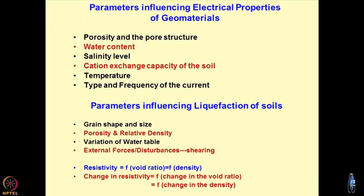Now come the parameters which influence the electrical properties of geomaterials. Porosity and pore structure is number one, because the passage of current through the geomaterial is due to its inherent porosity and pore structure. The pore structure and orientation of grains play a very important role — similar to why permeability is more in the flocculated state compared to the dispersed state. Water content, salinity level, and cation exchange capacity of the soil also matter. The more the cation exchange capacity, the more cations adhere on the surface and act as conductors of current. Fine-grained materials with negatively charged grains would be better conductors of current compared to sands.